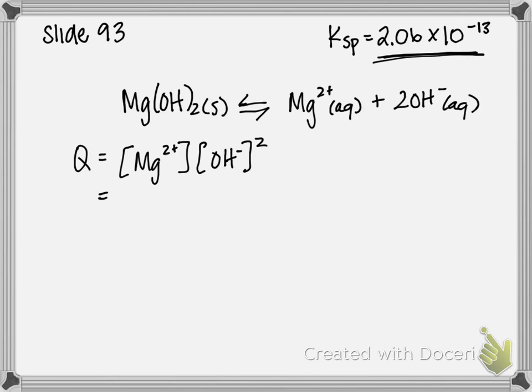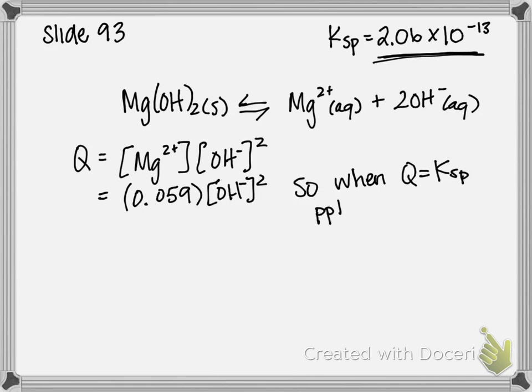So my Q is equal to 0.059 times my hydroxide concentration, which is what we're trying to solve for. We don't know that. So when Q is equal to Ksp, precipitation occurs above this concentration.